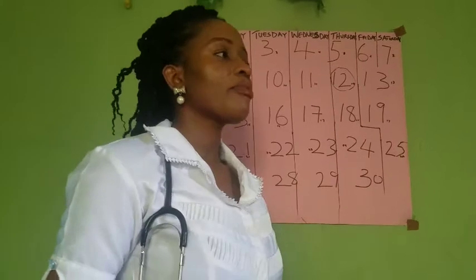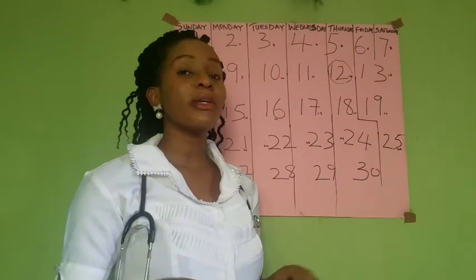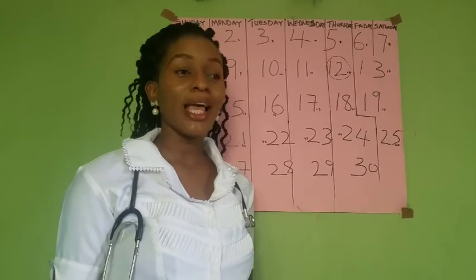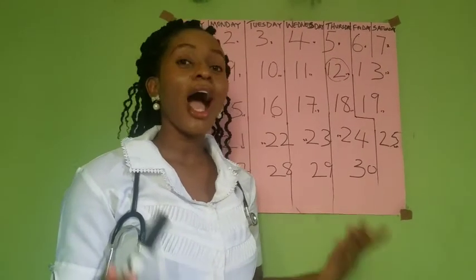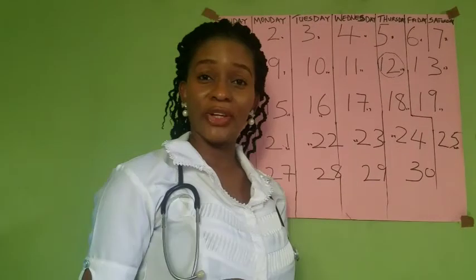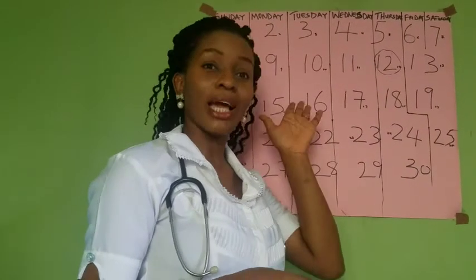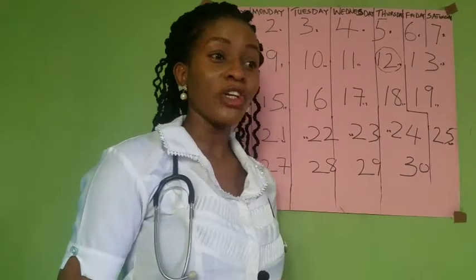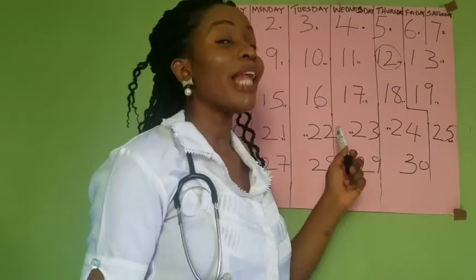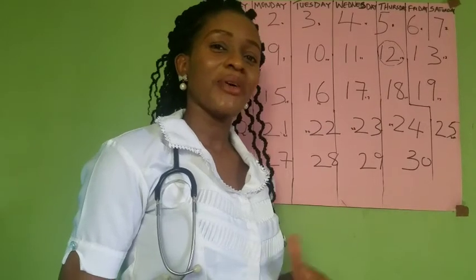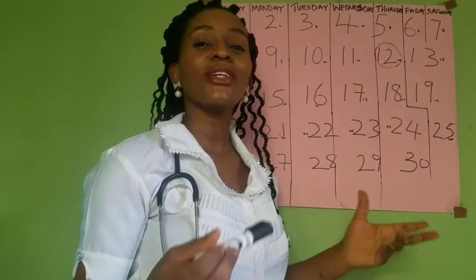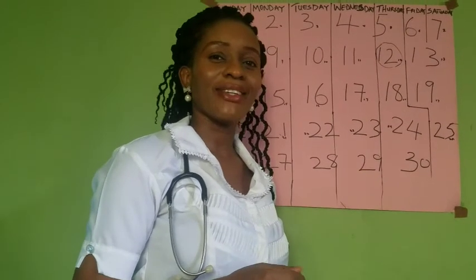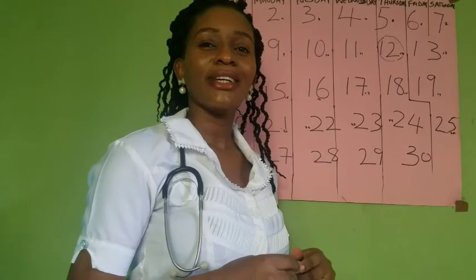Finally, the only family planning method that is 100% accurate is abstinence. Other family planning methods are 98% accurate. I hope you've enjoyed this video, and from today you can calculate your safe period easily to avoid pregnancy. If you enjoyed this video and would like to see more, please subscribe and turn on the bell icon so you won't miss out when I upload another great video. See you in my next video. Bye.